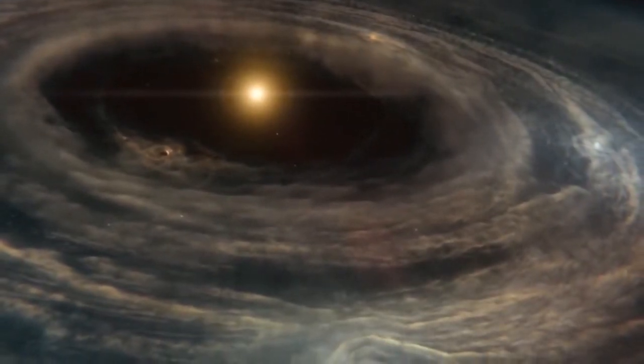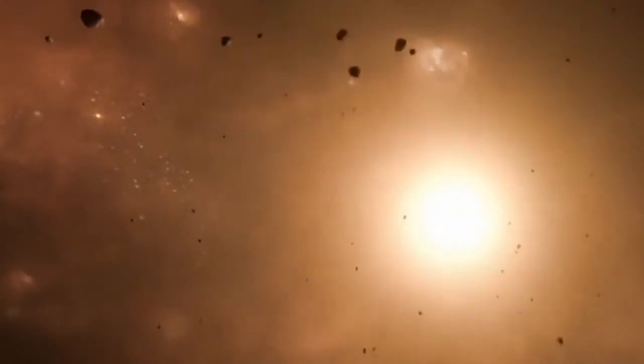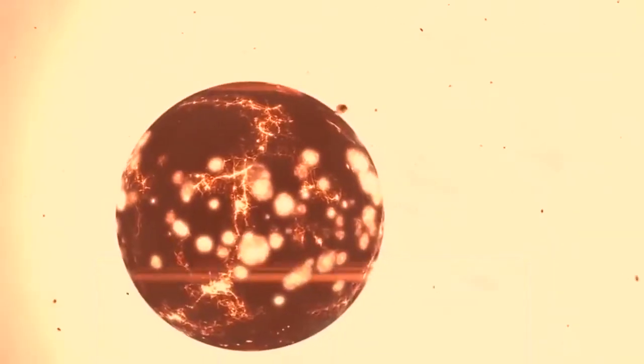The Sun and the solar system formed when a cloud of dust and gas collapsed due to its own weight. Most of the gas condensed to become the Sun, while the remaining material went into the surrounding planet-forming disk.